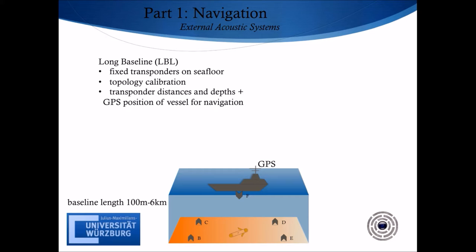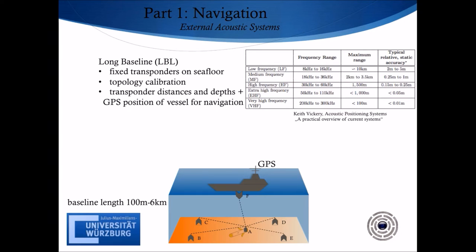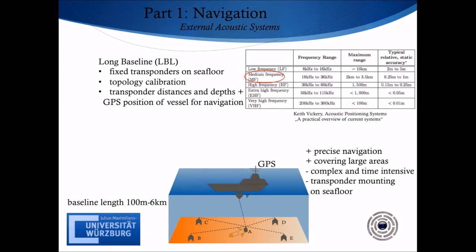The operation is similar to that of the SBL system. The vehicle's transducer A sends a signal to the net of transponders, which echo the signal back so that the vehicle can estimate its position in all directions. One important difference is that the LBL navigation technique is highly dependent on frequency. From the table, one can see that the lower frequency range used for interrogation has a higher effective range. But in contrast, the accuracy gets lower. To achieve maximum operational range, the majority of LBL systems operate in the medium frequency band. In regard to the SBL navigation system, the LBL navigation system has more advantages, like precise position estimation independent of water depth. Another crucial advantage is the provision of operational range over large areas.